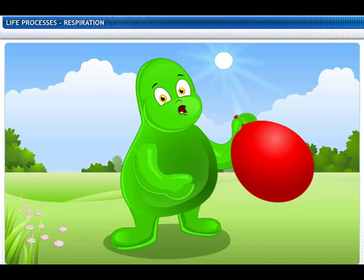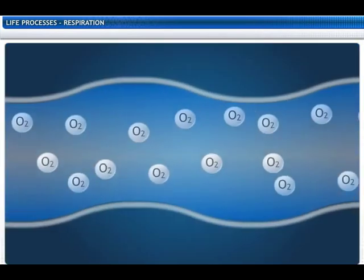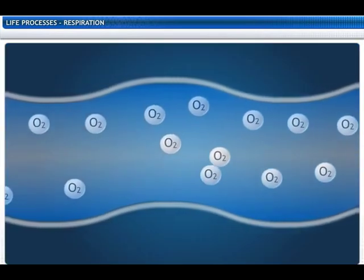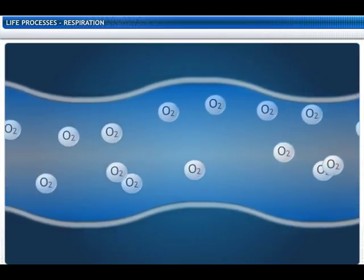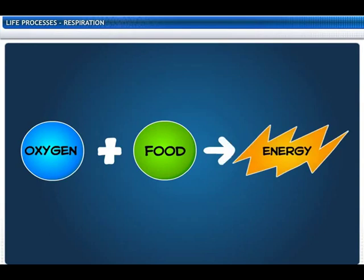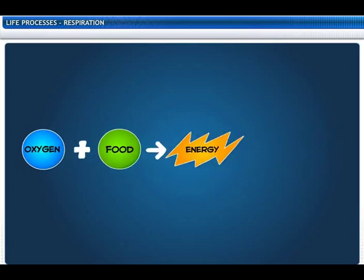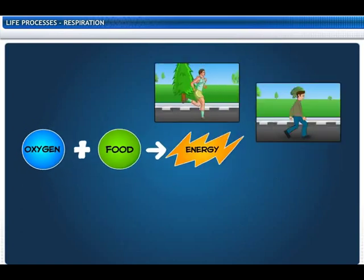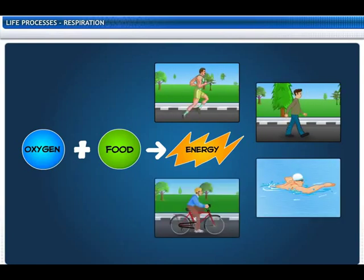Phil, I am out of breath. Let me get some air. Air is vital for us as it contains oxygen. Oxygen is used to break down the food we eat into energy. This energy in turn is used by us for various activities like running, walking, swimming and cycling.